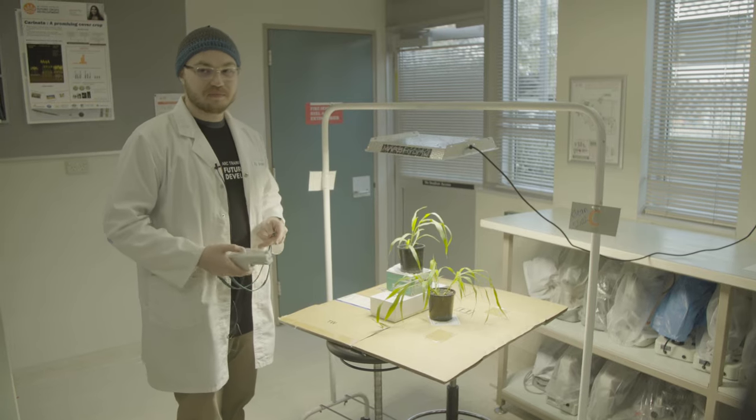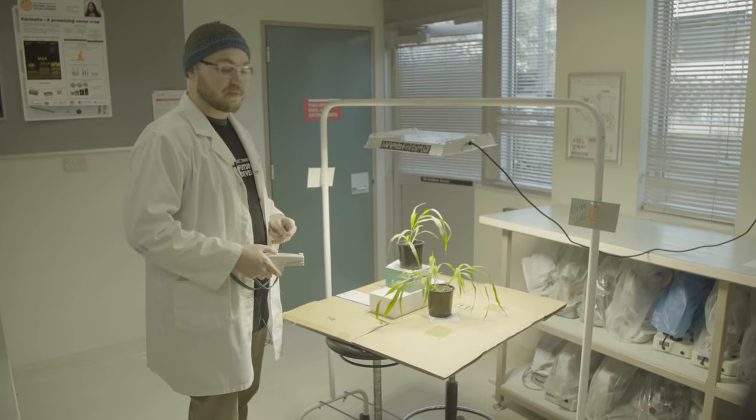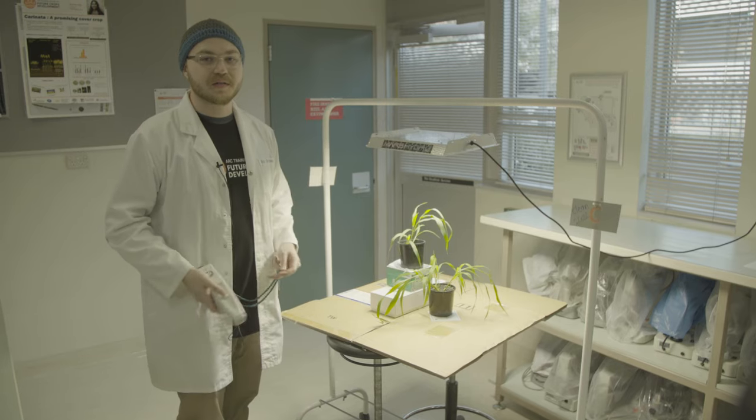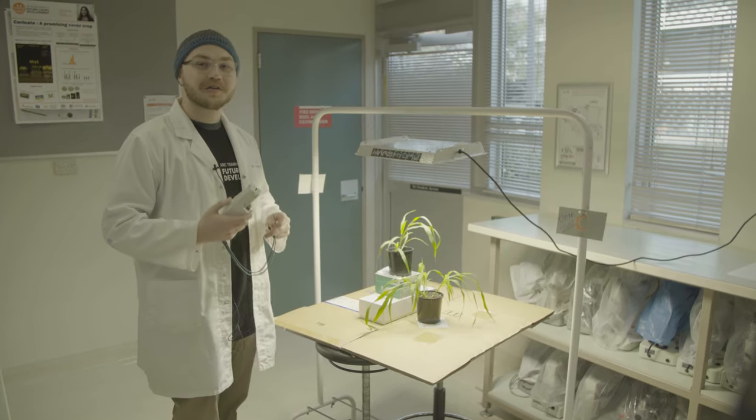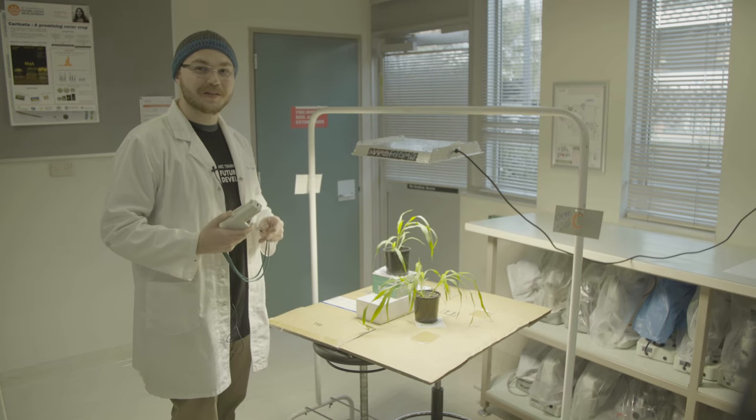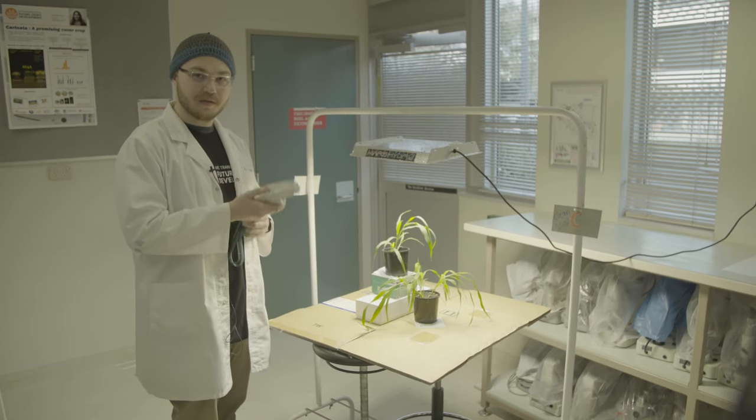So the LI-COR 6800 is a way to measure CO2 assimilation. That's just one part of photosynthesis. The other part is light absorption. You can measure the health of the photosystems in photosynthesis by using this, the MultispeQ.